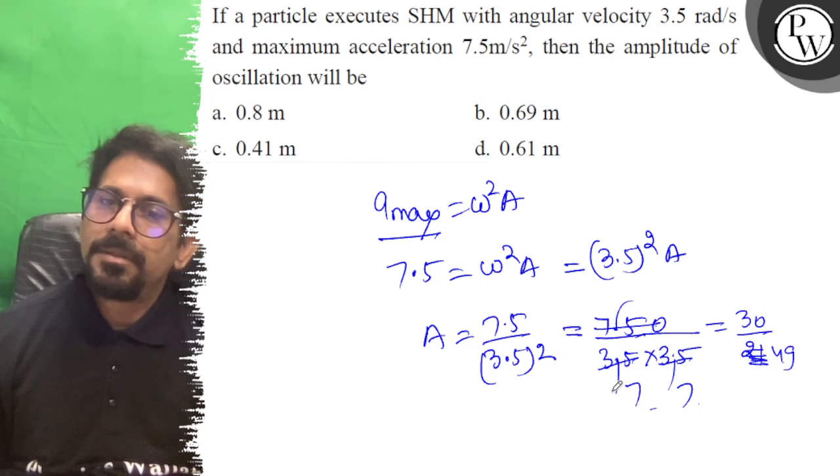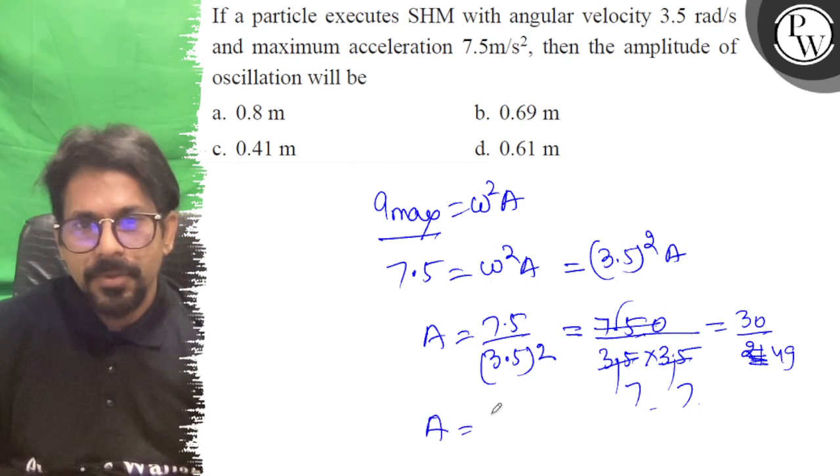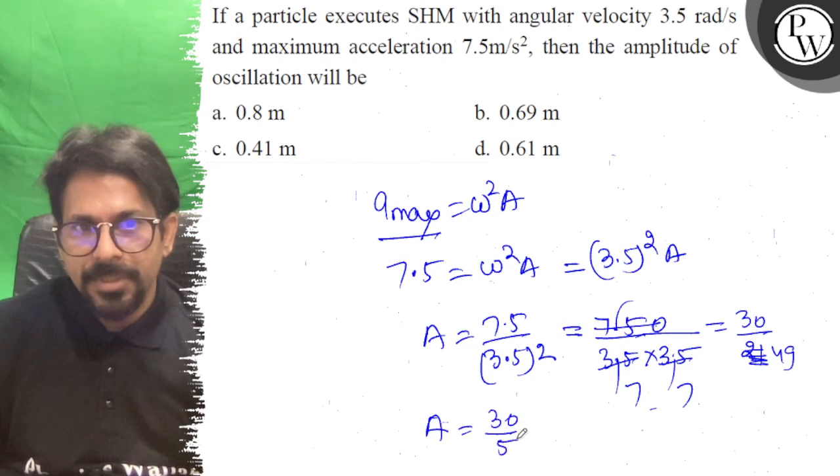Now I will count it as 50, so I will count it 50. So you get 30 upon 50 which is 0.6.